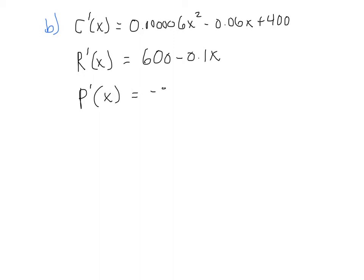is going to be 600 minus 0.1X. And then that marginal profit function is negative 0.0000006X squared minus 0.04X plus 200.